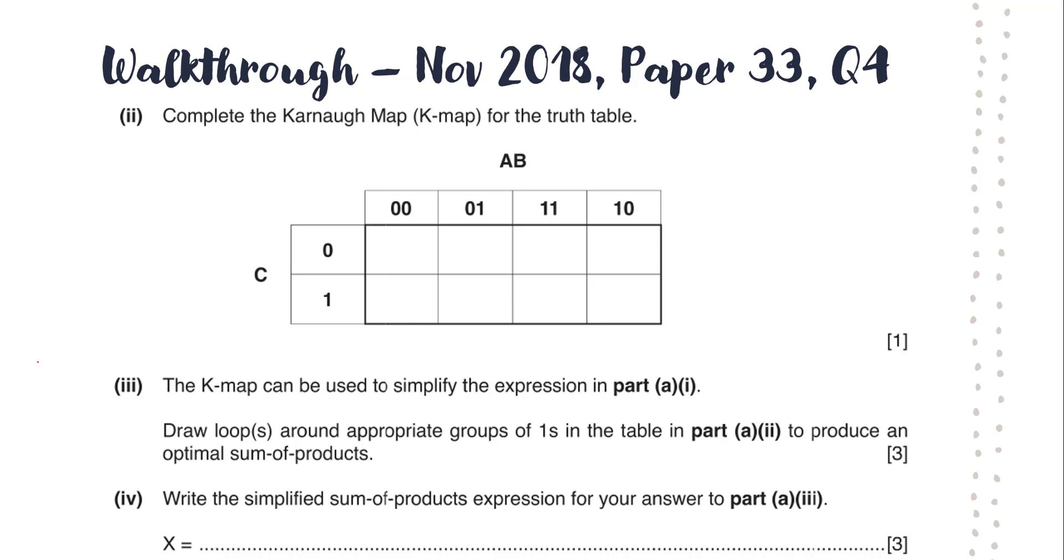Now we get to the Karnaugh map itself. We need to take those sum of products and put them into the Karnaugh map. Along the top here, you can see I've got binary values for A and B. This is known as gray code. Now, gray code, yes, it's binary. The value on the left corresponds to the left-hand variable, so A in this case, and the value on the right corresponds to B. You can see over here for C, it's still gray code, but we've only got one input, and we know in binary that's going to be one of two states, zero or one.